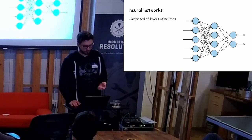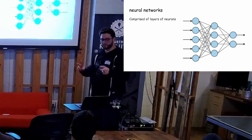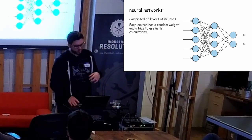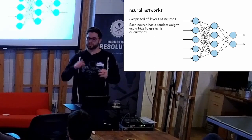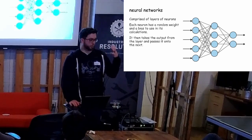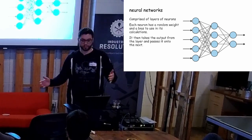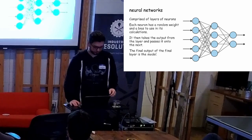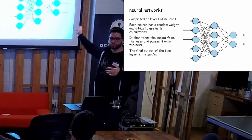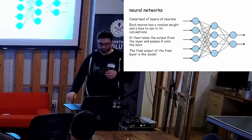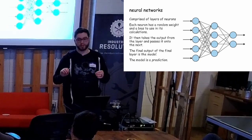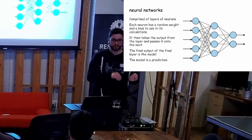You often see these little diagrams representing a neural network or a machine learning model, right? What does that actually mean? It's comprised of layers of neurons and the columns are the layers and the little circles are the neurons. Each neuron has a random weight and a bias to use in its calculations, which we're going to come back to and how that's used. It takes the output from one neuron and actually passes it to every neuron in the following layer. The final output of the final layer, these arrows on the right, is the model. So you put in a bunch of data, it does a bunch of stuff, spits out a model.